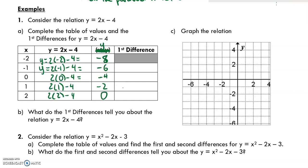Now we calculate the first differences. It's really important that you get the order correct: it's the later value minus the previous value. Negative 6 minus negative 8 is negative 6 plus 8, which is 2. Negative 4 minus negative 6 is negative 4 plus 6, that's 2 again. Negative 2 minus negative 4 is negative 2 plus 4, that's 2 again. And 0 minus negative 2 is 0 plus 2, which again equals 2.